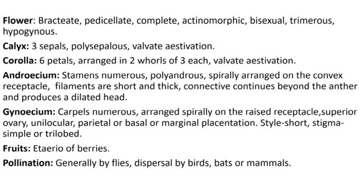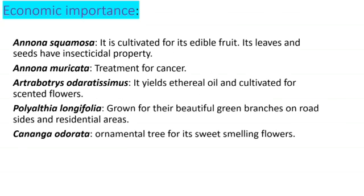Style is short, stigma is simple or trilobed. Fruits: etaerio of berries, e.g. Annona squamosa. Pollination: generally pollination occurs due to flies. Dispersal by birds, bats and mammals.